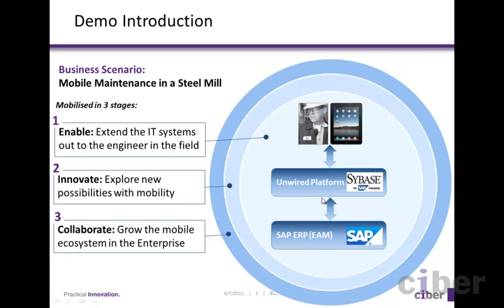In the top left corner, you can see the particular business scenario we are going to work with: mobile maintenance in the steel mill. The application will support the work of engineers who maintain the equipment in the mill. We will be looking at the evolution of mobility in the steel mill in three stages, which are typical of the stages an enterprise goes through in its adoption of mobile technology.